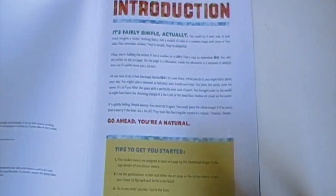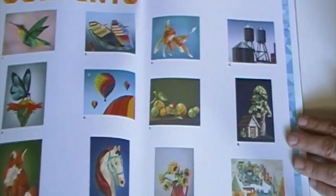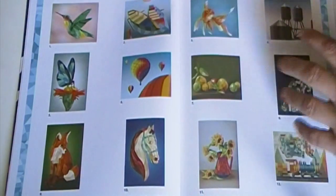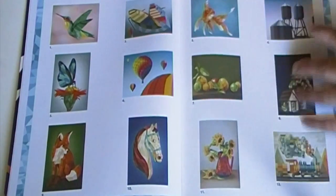So when you open the book, it gives you some tips to get started, your introduction. It shows you what they're going to look like once you've put all the stickers on. And then there are 12 pictures.